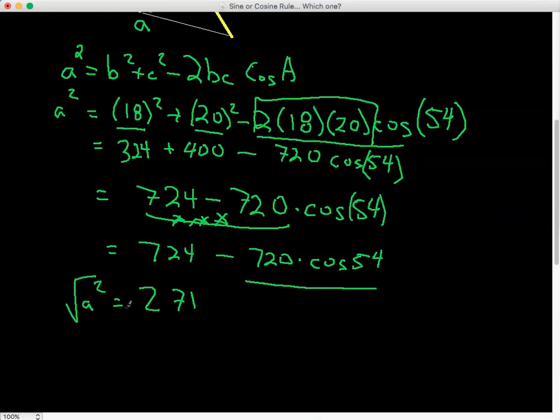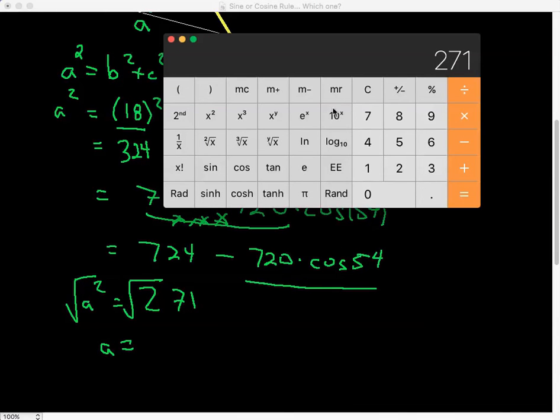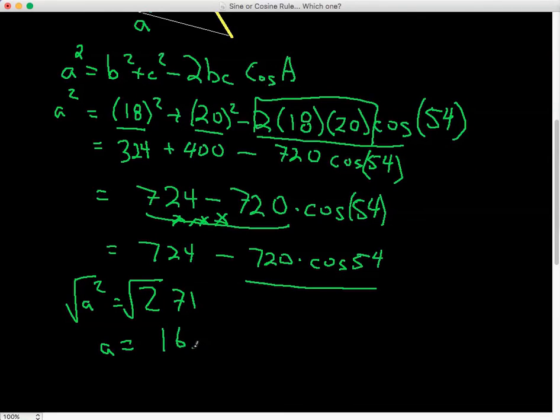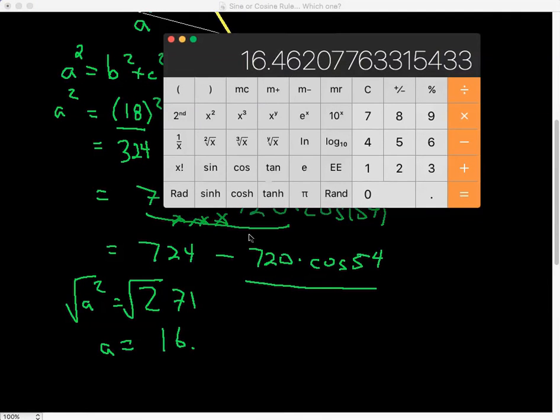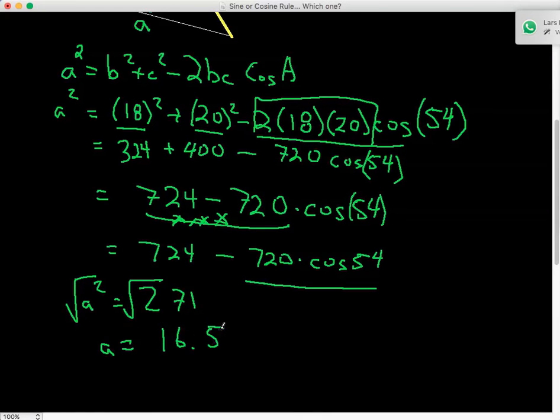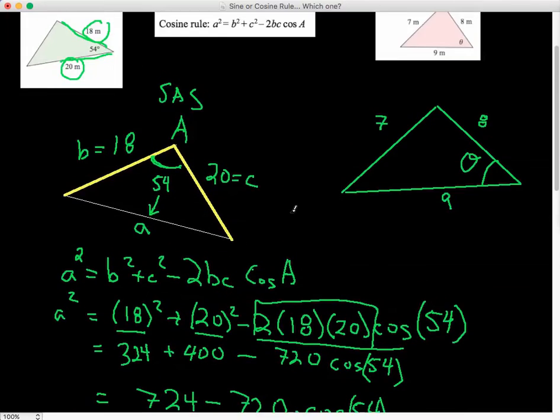Now we square root both these sides, and we have a is equal to, and so if I square root this, I get 16.5 to 3 significant figures. And that is our answer. So that's one example of using the cosine rule, side, angle, side, to get the side across from the angle that we have.